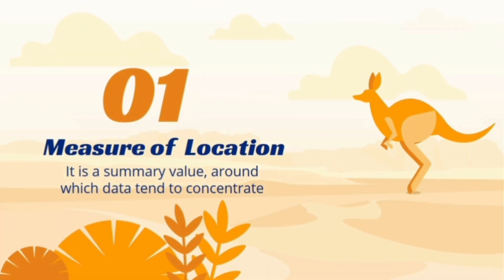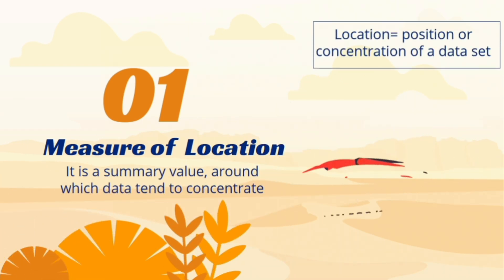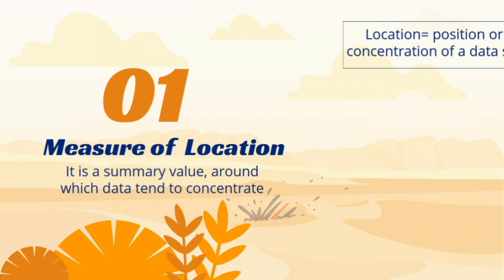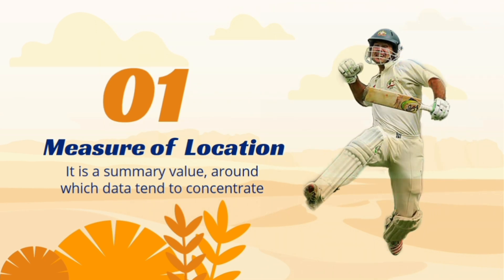We begin with measure of location. It is also called average and it is the only value that expresses the whole dataset. Basically, it is such a value where dataset tends to concentrate. It is just like a player's batting average that is a single value but tells overall story about how well a player plays.